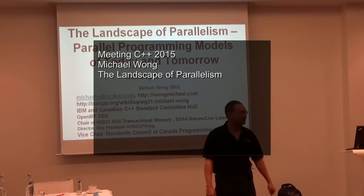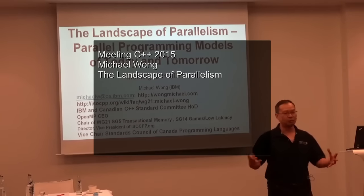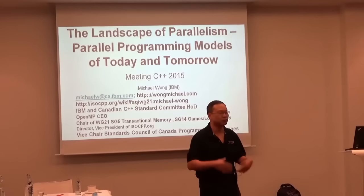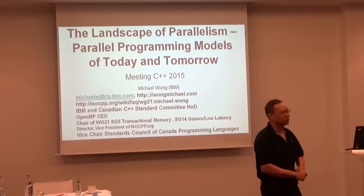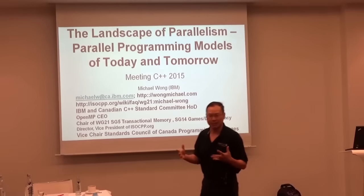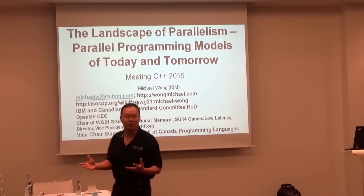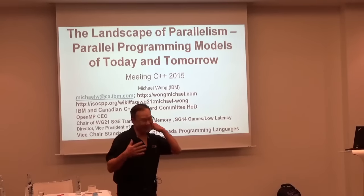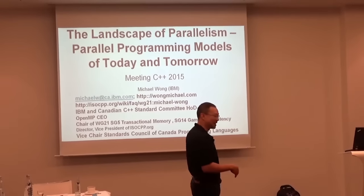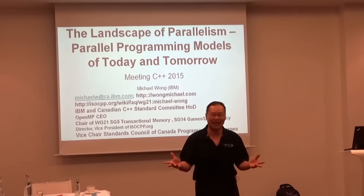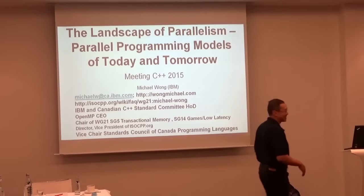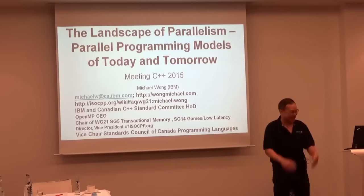My name is Michael Wong. I am Chandler's counterpart at IBM. I lead the Excel compiler group in terms of strategy — I used to be their team lead. Through all that time I've been the C++ standard rep. As time went on, I started accumulating other jobs and other titles, which pretty much means I barely get anything done. I have great people behind me who get lots of things done, and they make me look good.